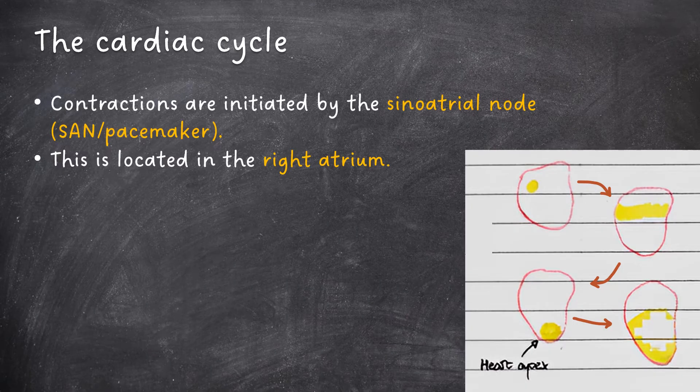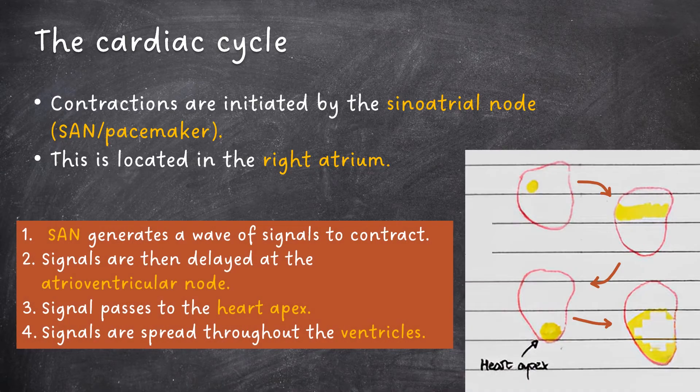Contractions are initiated by the sinoatrial node, also known as the SAN or pacemaker, which is located in the right atrium. The SAN generates a wave of signals to contract. The signals are then delayed at the atrioventricular node, pass to the heart apex, and then spread throughout the ventricles.